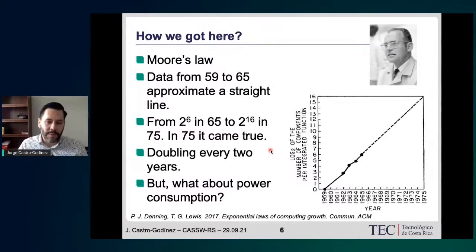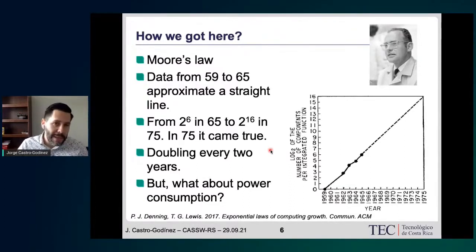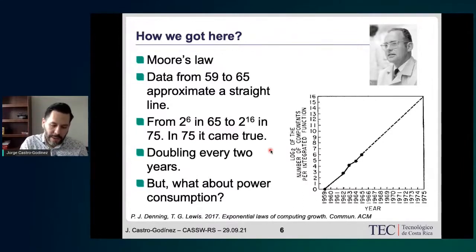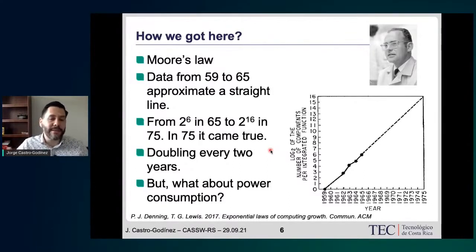We're going to talk about approximate computing and how it proposes a way to trade off accuracy in computations in order to gain savings, mainly focusing on energy savings. But it's interesting to recall how we got to the point of trading accuracy for energy, power, or area efficiency. One thing you all know is that for a long time, the industry has followed Moore's law — an auto-predicted prophecy — trying to achieve the doubling of the number of transistors every two years, which has many implications and has brought us to where we are today.